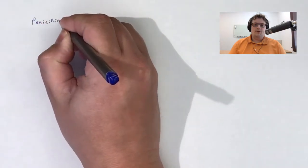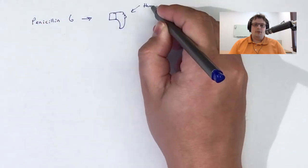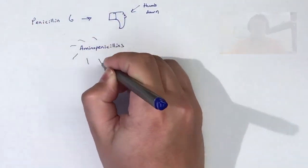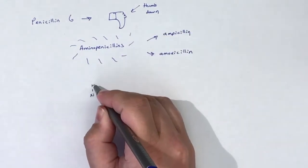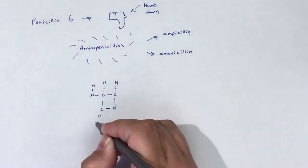To improve upon the drawbacks of using penicillin G in gram-negative bacteria, there was a need for an antibiotic with improved gram-negative coverage. Enter the aminopenicillins.